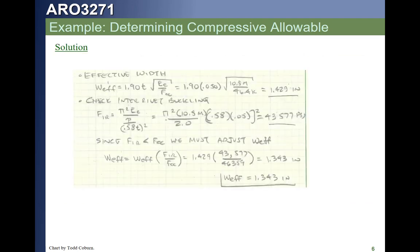Now we calculate the effective width by plugging into our equation. We could use FCY if we had no better information, but since we have the crippling allowable, that's better information than FCY. Plugging FCC into the equation gives a very good estimate of the effective width of skin: 1.429 inches. We then calculate the inter-rivet buckling allowable for our fasteners and find that's 43 KSI. Since that is less than FCC, we need to adjust our effective width, and find the true effective width is actually 1.343 inches.